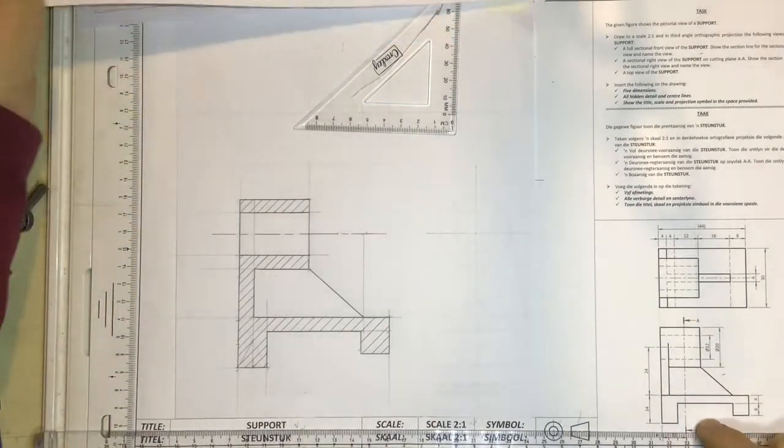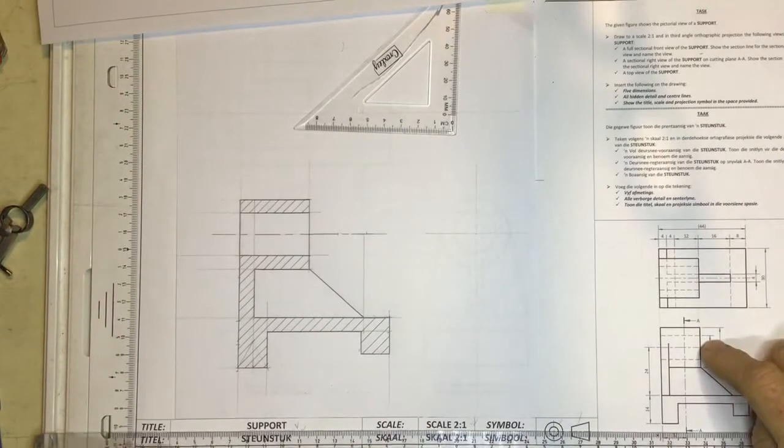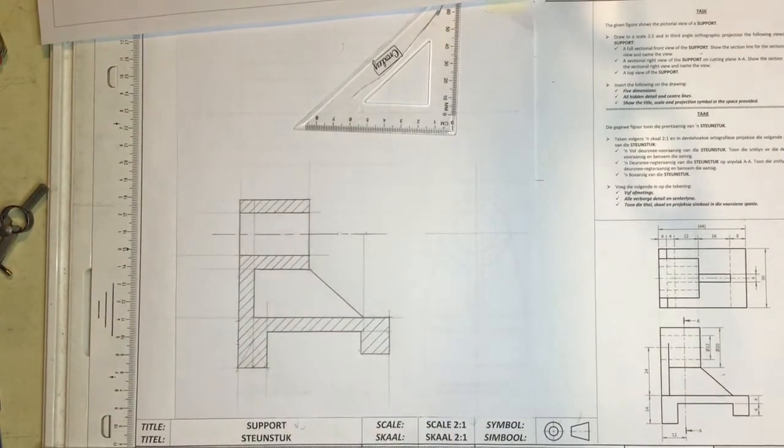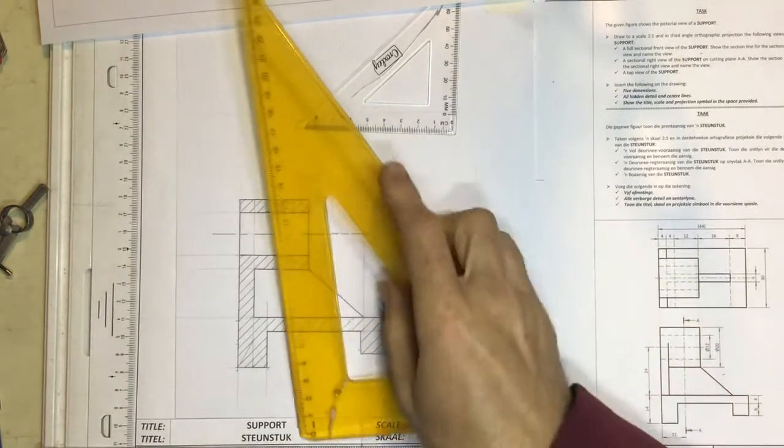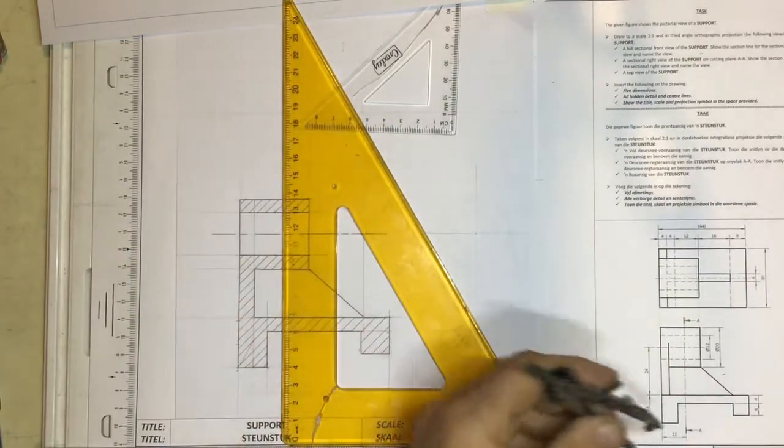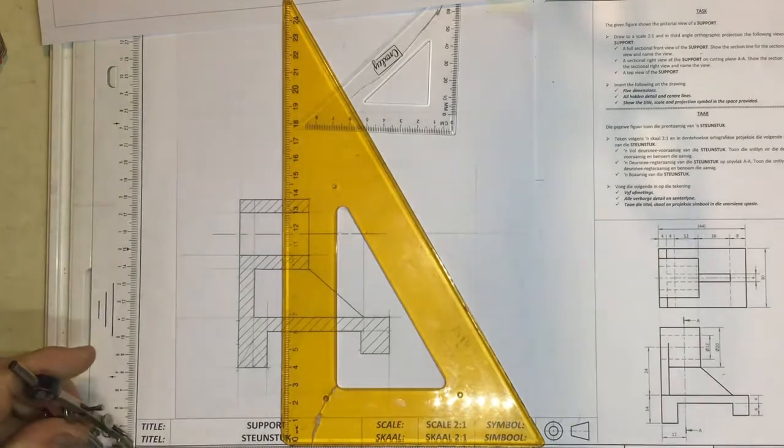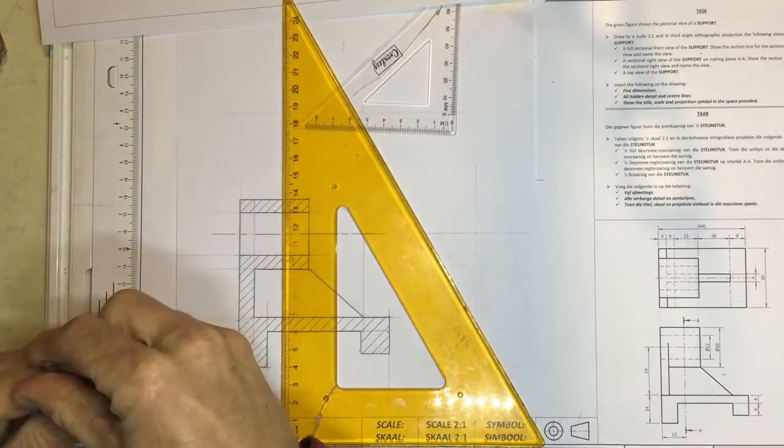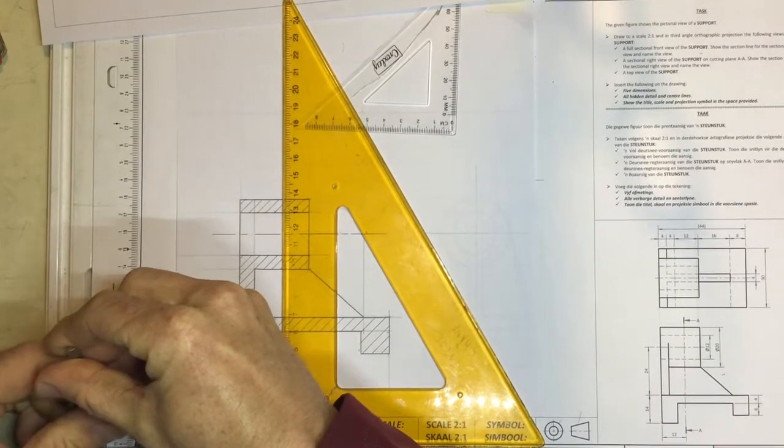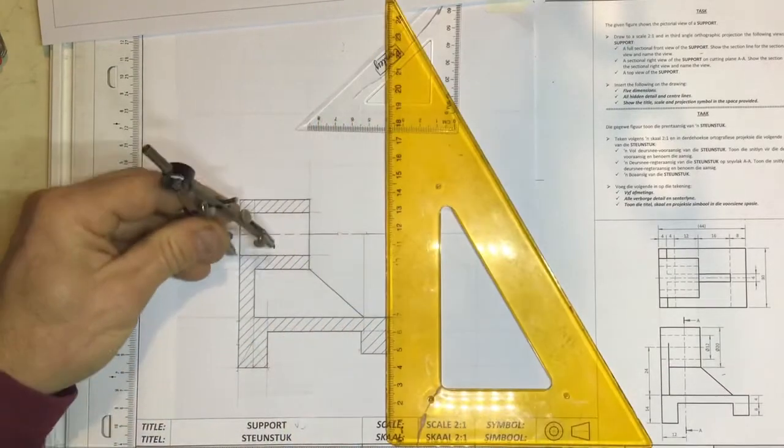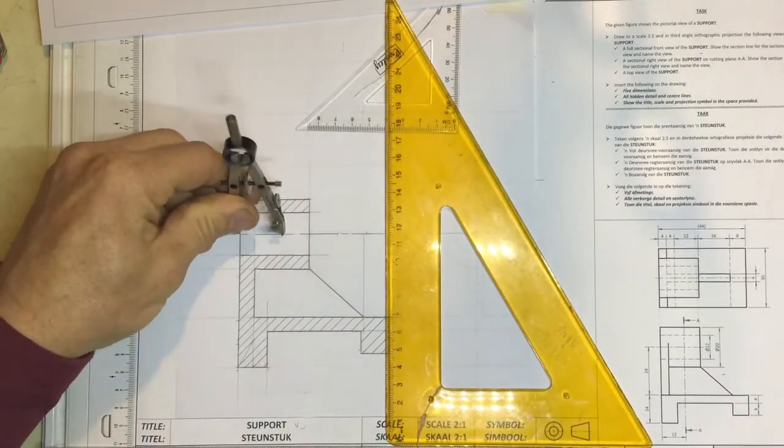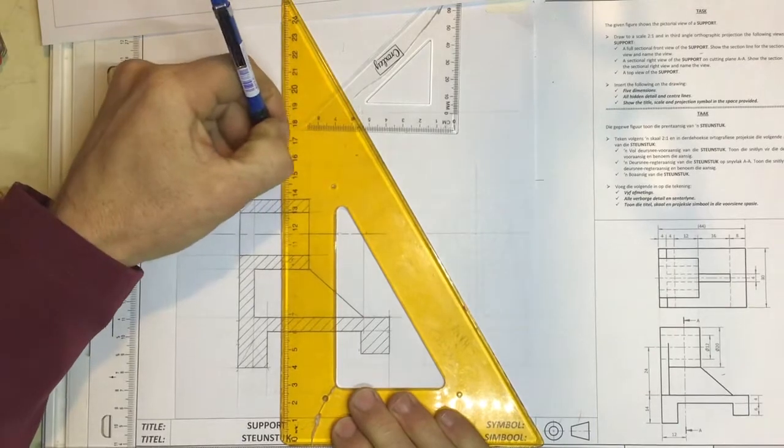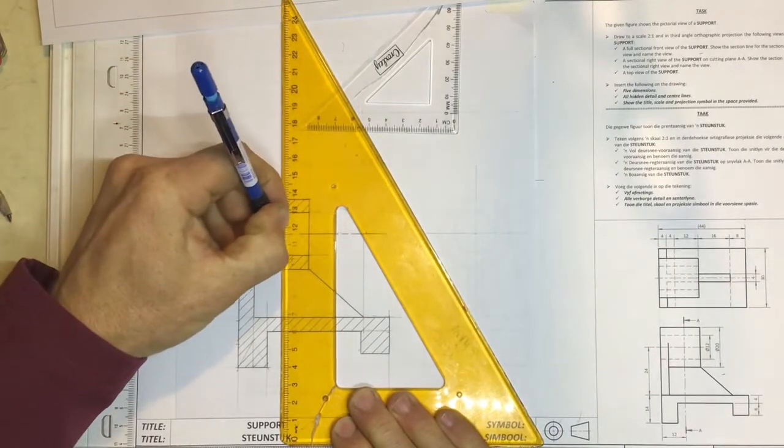What I would do to start with is draw in that cutting plane on your front view so that you know what you're doing. And here we go. I'm going to measure off. They say that is 12 millimeters. Come along here, 12 millimeters multiplied by two would be 24 millimeters. Come in over here to my center line, mark that off on that center line, and draw in your cutting plane.